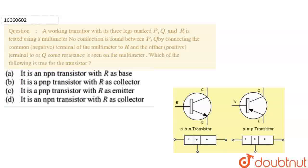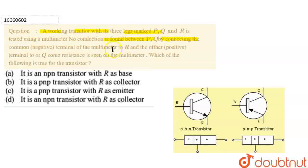Hello everyone, the question is for you. A working transistor with its 3 legs marked as P, Q, R is tested using a multimeter. No conduction is found between P and Q. By connecting the common negative terminal of the multimeter to R and the other positive terminal to P or Q, some resistance is seen on the multimeter. Which of the following is true for the transistor?